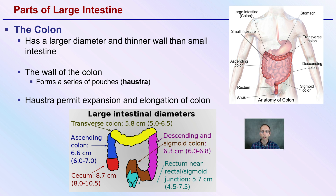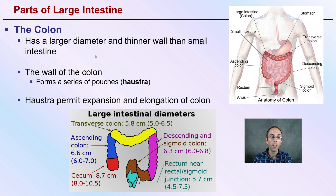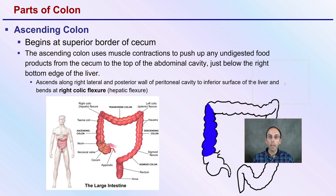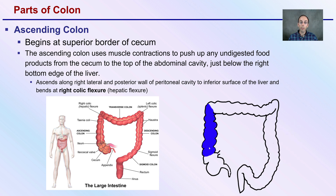Looking at the colon, it has a large diameter and thinner wall than the small intestine. The wall of the colon forms a series of pouches called haustra, which permit expansion and elongation of the colon. Working through the anatomy, the ascending colon — shown here in blue — begins at the superior border of the cecum and uses muscles and contraction to push undigested food products upward to the top of the abdominal cavity, just below the right bottom edge of the liver, running along the lateral and posterior wall of the peritoneal cavity to the right colic flexure.